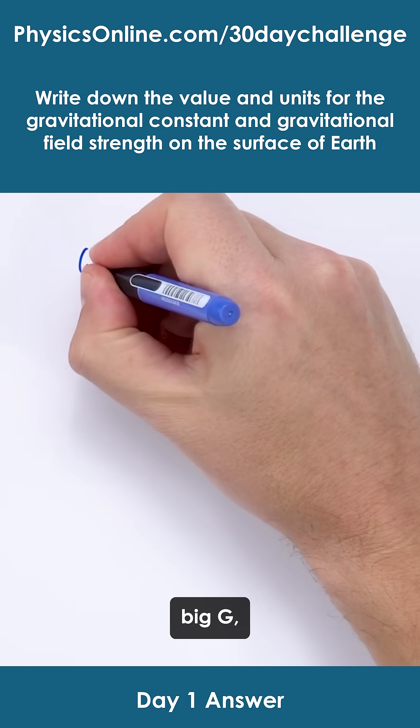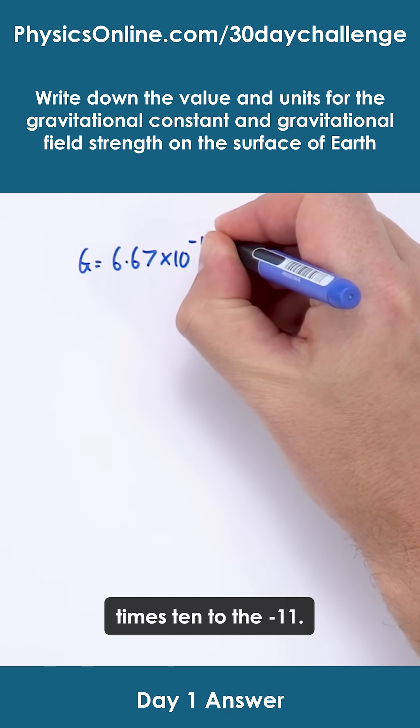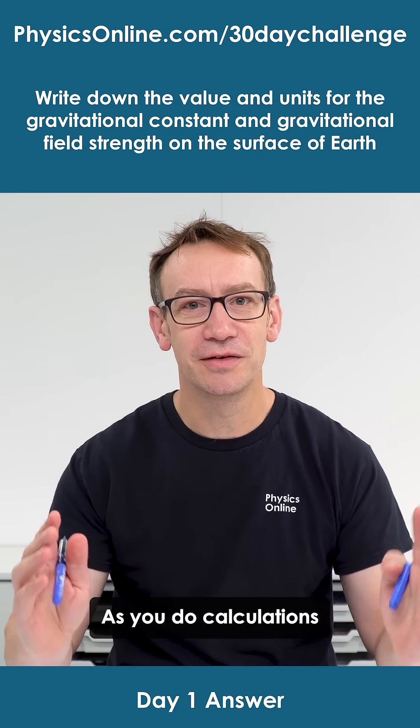So the first one, big G, the gravitational constant, this has got a value of 6.67 times 10 to the minus 11. So that's a number that you're going to be really familiar with as you do calculations over the coming months.